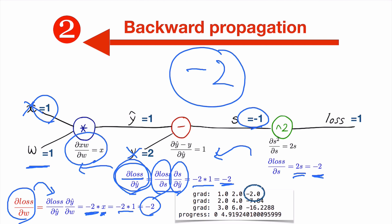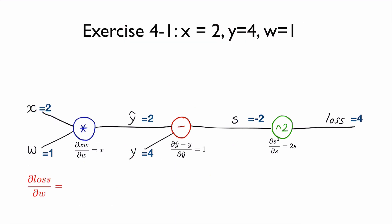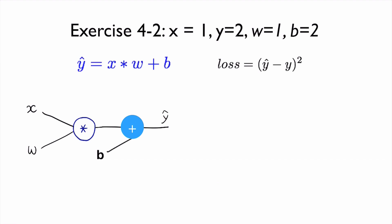If you remember our previous example and its result, you'll see these numbers match. When we computed the gradients manually with x equals 1 and y equals 2, the gradient was minus 2, which is exactly the same value obtained using this computational graph and backward propagation. As an exercise, you can try with different x values to verify. You can also try adding a bias term and compute the gradients using the computational graph and backward propagation.